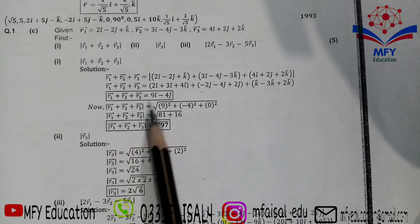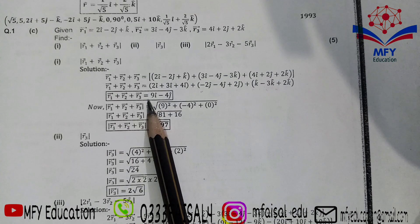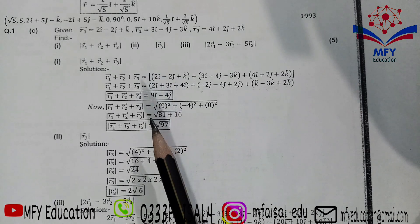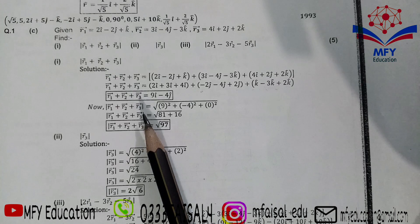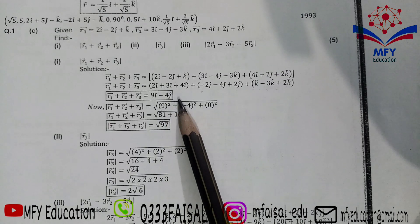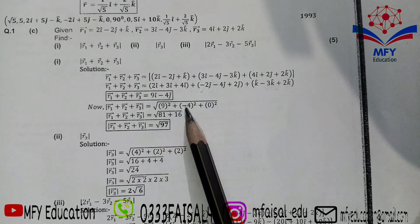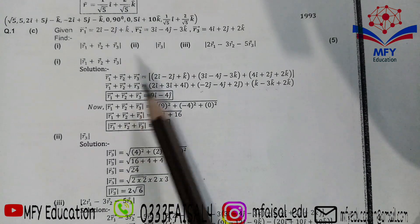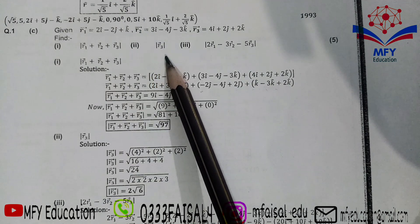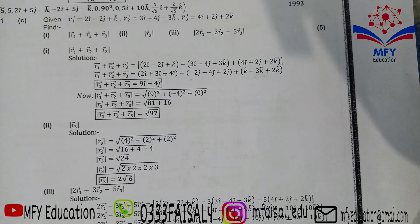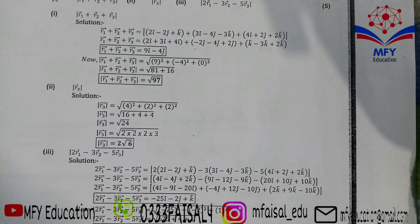Now find |R1+R2+R3|. The resultant vector is 9i − 4j. Using |v| = √(x²+y²+z²): x = 9, y = −4, z = 0. So |R1+R2+R3| = √(81+16) = √97. Since √97 cannot be simplified to a whole number, leave the answer as √97.